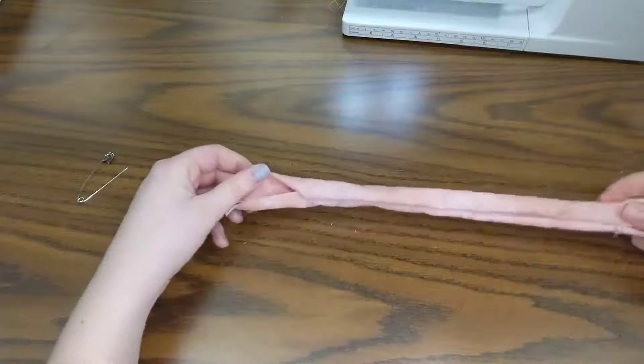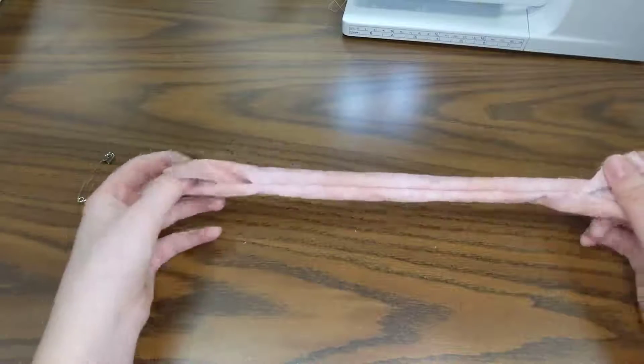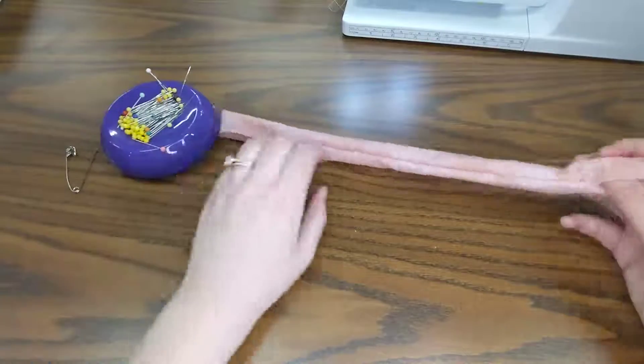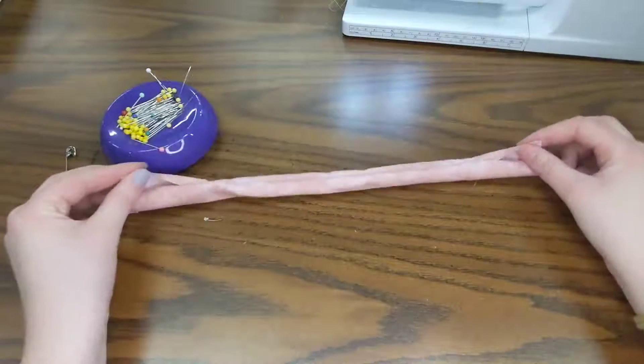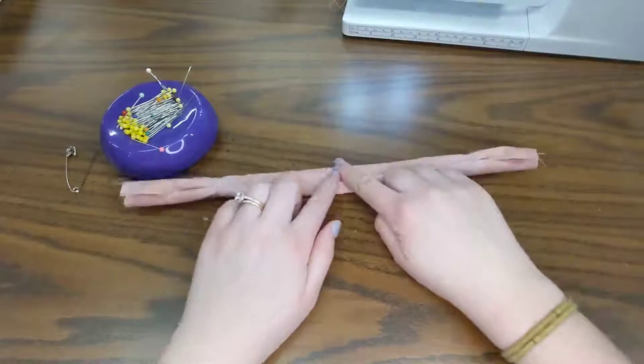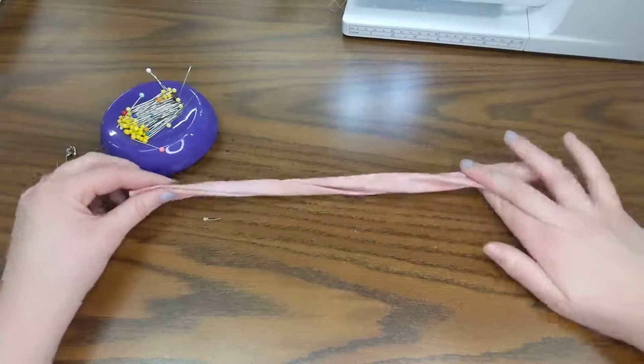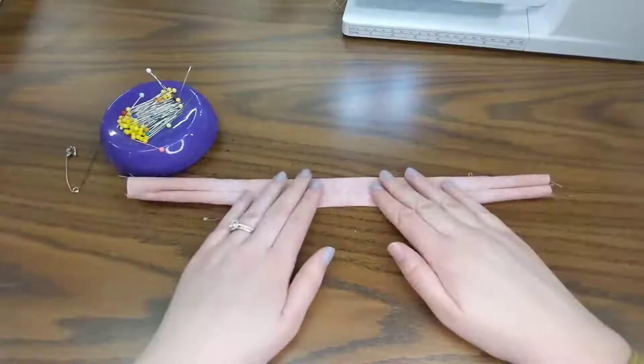Next, I'm going to take my two ends and pin them together. Watch closely as we do this. My ends are right here. I'll start by making sure that this seam is on the top so it's not twisted, because I don't want it to look like this.